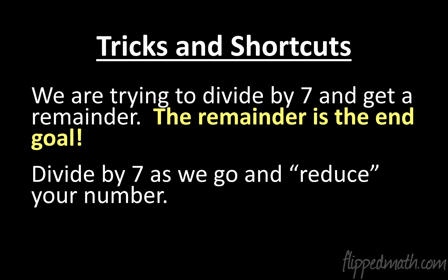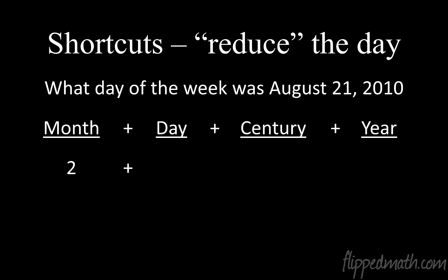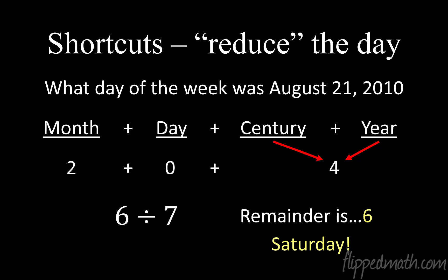Now I want to show you what I'm doing in my head to speed things up — because the faster you can calculate, the more impressive it is. Since we're dividing by 7, you can reduce numbers as you work. For example, August 21st, 2010: August is 2. The day is 21, but I count it as 0 because 21 is divisible by 7 — numbers divisible by 7 just cancel out. Then century and year is 4. So now I just have 2 plus 4 equals 6. 6 divided by 7 has a remainder of 6 — that's a Saturday.